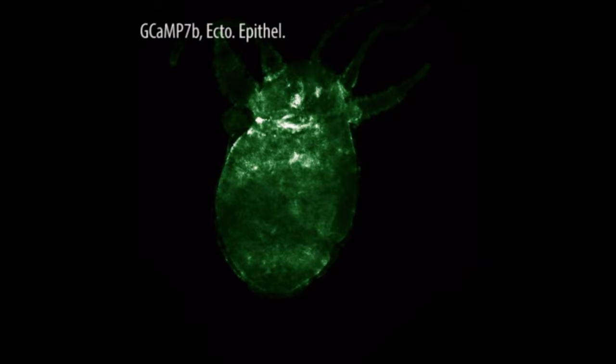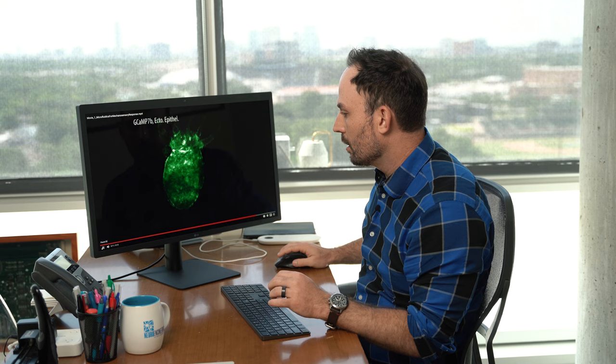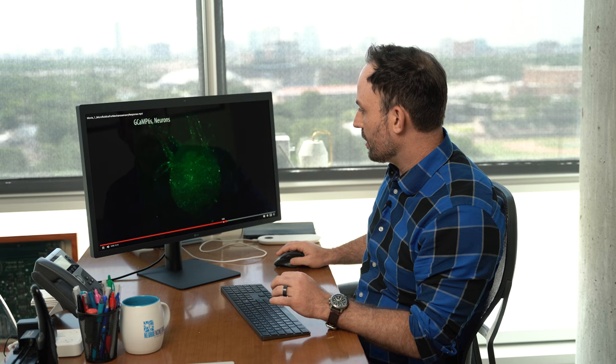We'll do the same thing with the muscle cells. You'll see right when the valve hits, these muscles respond and that shows me that the animal is contracting. And you see each time that we apply a stimulus we get that same kind of pattern of activity in the neurons and in the muscle cells.